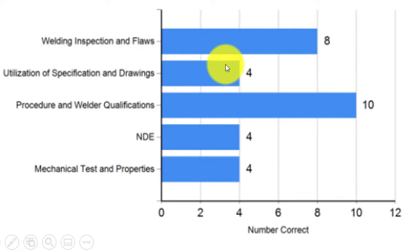You look right here - he got four out of five. Then procedures and qualifications, he got 10 out of 14, so he didn't do too bad right here. That's maybe something he should look into. But especially the welding inspection and flaws - if he concentrates more on this, he'll pass the test next time.